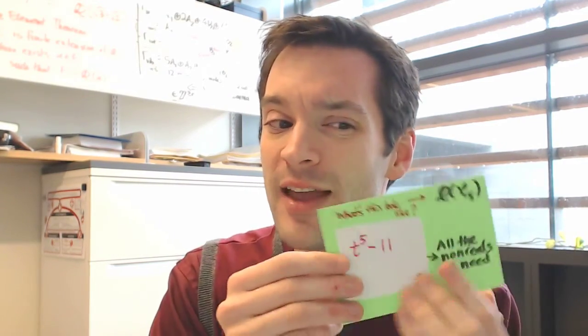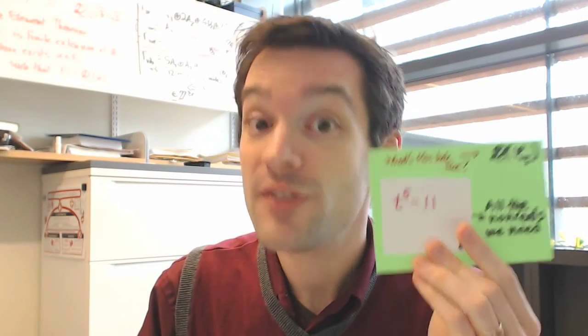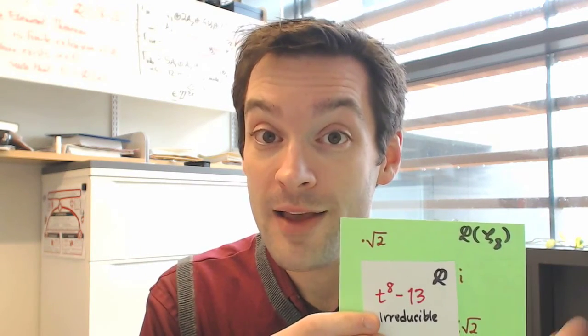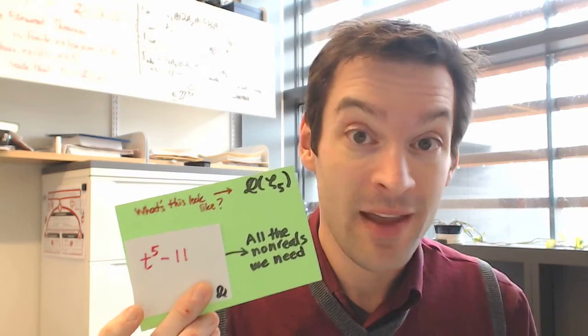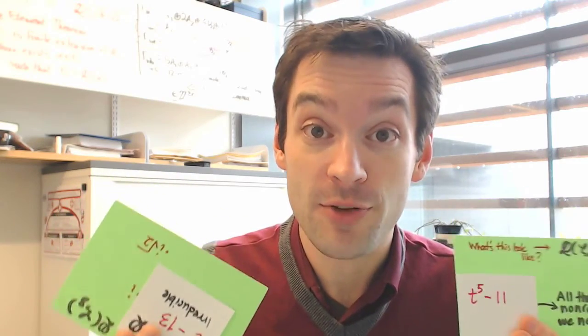How is that different from an extension where I have a polynomial like t to the 5th minus 11? Now I have a 5th order polynomial, and I want to extend to get all of the non-real 5th roots of unity. In this video, we're going to see how the story is very different if we take a cyclotomic extension to get a root of unity of prime order versus composite order. The 8th cyclotomic field is an extension by the 8th root of unity and 8 is composite, whereas the 5th cyclotomic field is an extension by the 5th root of unity and 5 is prime.